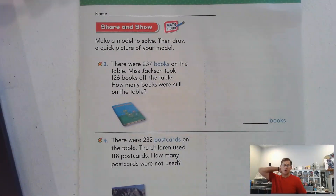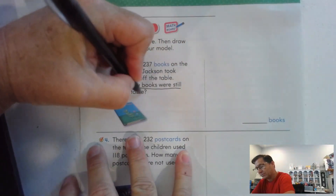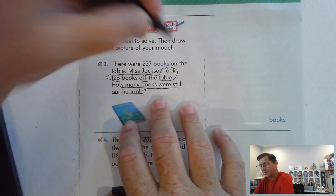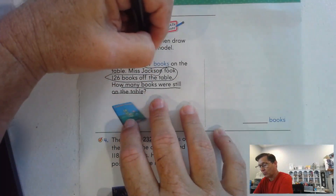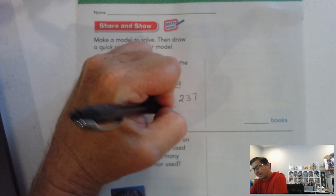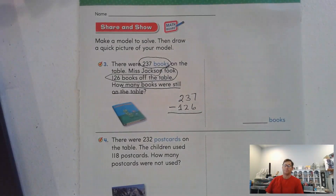Let's look at page 307. Make a model to solve, then draw a quick picture of your model. There were 237 books on the table; Miss Jackson took 126 books off the table. How many books were still on the table? She took off 126; there were 237. So we have to subtract 126 — the remaining amount is what's left on the table.